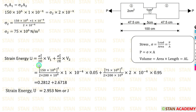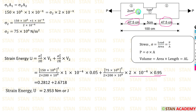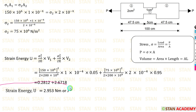Now we apply the strain energy formula using the calculated sigma2. We calculate the volumes using V equals area into length. V1 equals 1 into 10 power minus 4 into 0.05. For the second section, V2 equals 2 into 10 power minus 4 into 0.95. After making all the calculations, the total strain energy U equals 2.953 newton meter. Since 1 newton meter equals 1 joule, we can also express this as 2.953 joule. This is the final result of this problem.